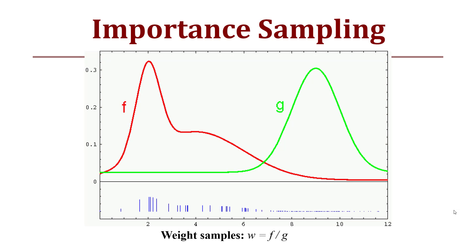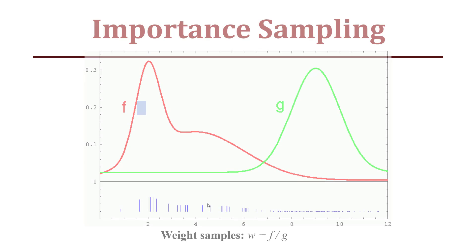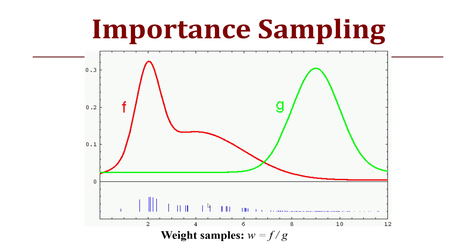Visually, we start with a normal Gaussian distribution g, pass it through f, and particles are selected based on their inclusion in f. The weighted samples f/g result in particle clusters at the most likely robot locations, rather than being evenly distributed across all possible locations. This concludes lecture 6-1 on the introduction to particle filters and Monte Carlo Localization. Have a robotastic day!